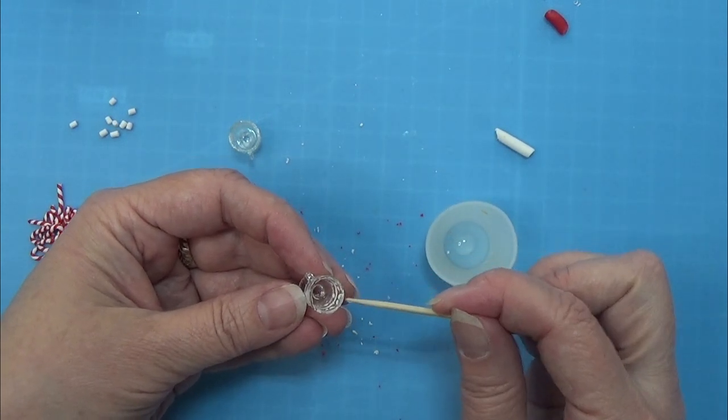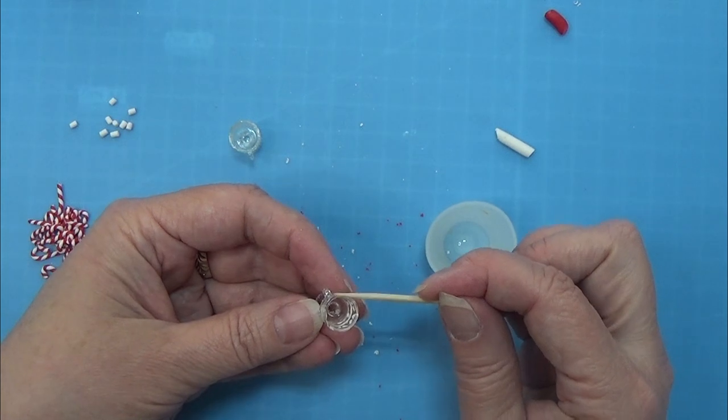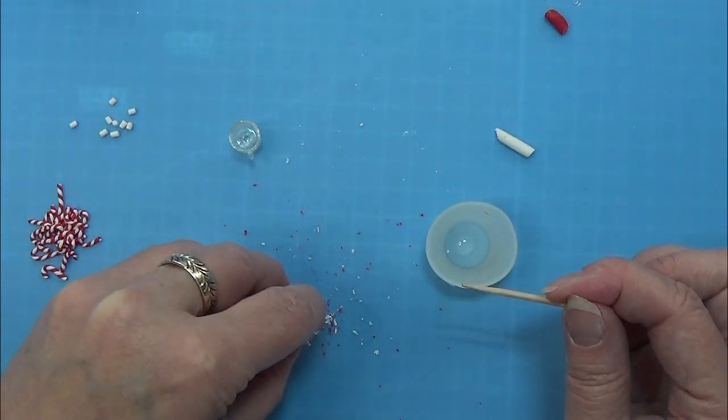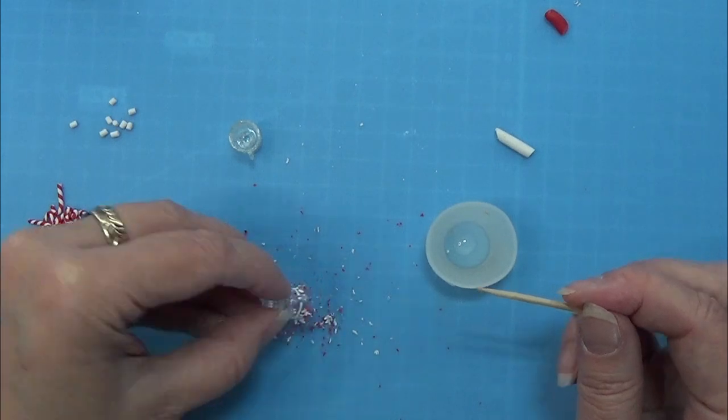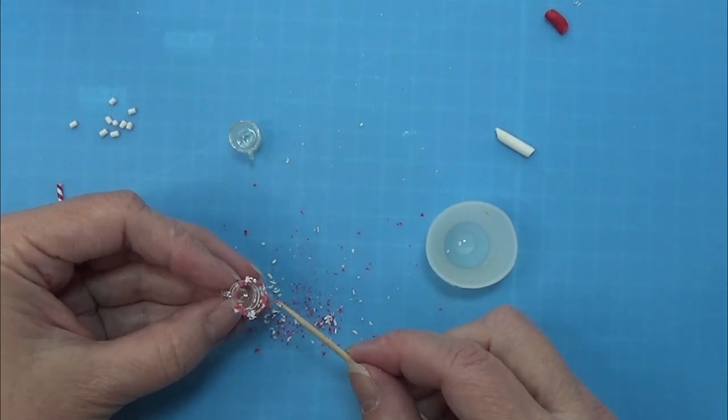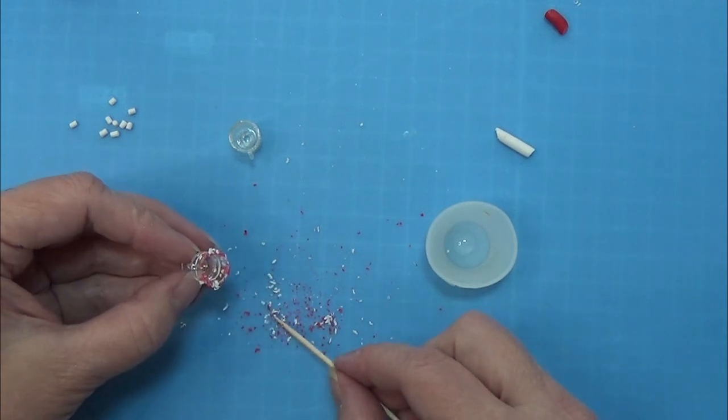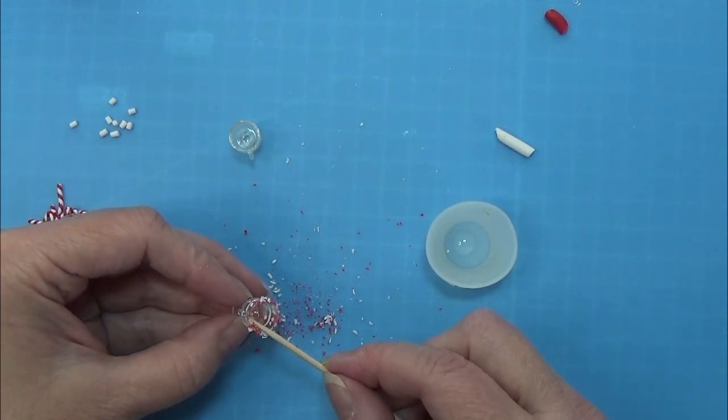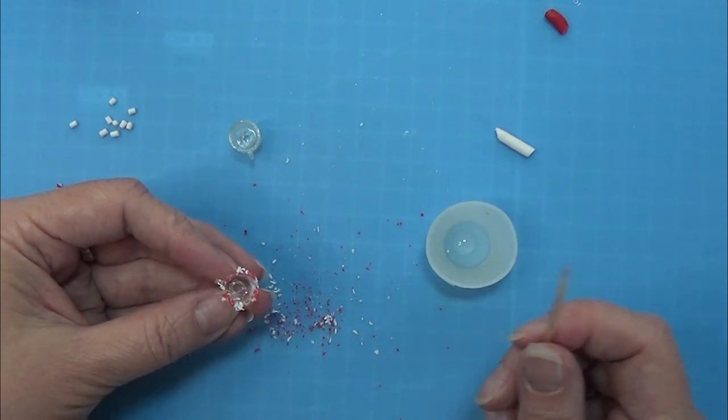And I am using a toothpick to put it around the rim of the glass. And then I am going to dip that into this grated polymer clay. I am dipping it into the grated polymer clay that we are going to use for sprinkles. And then I am going to pop these under my UV light.